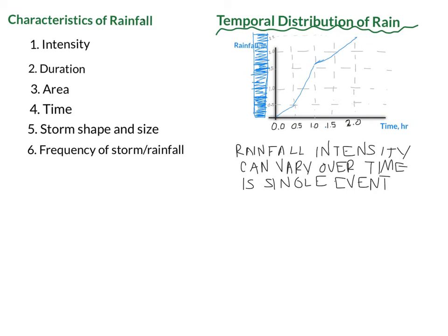And so this graph above is the temporal distribution of rain, the cumulative amount of rain in that storm. And so to get the intensity, the intensity is going to be the slope of that line. We're interested in the intensity, we want to know how much it rains per hour, so that is the slope of that line.